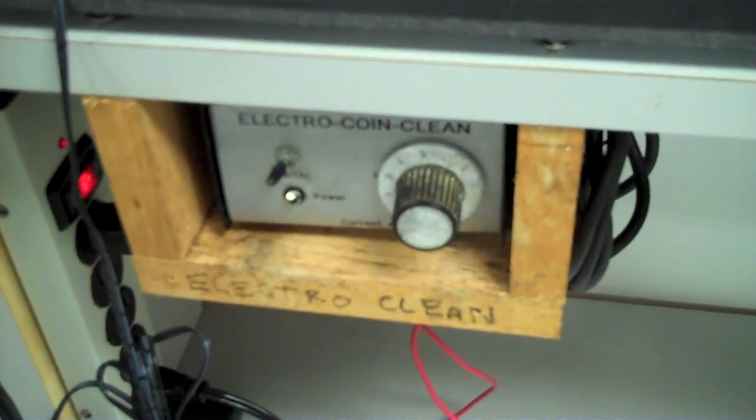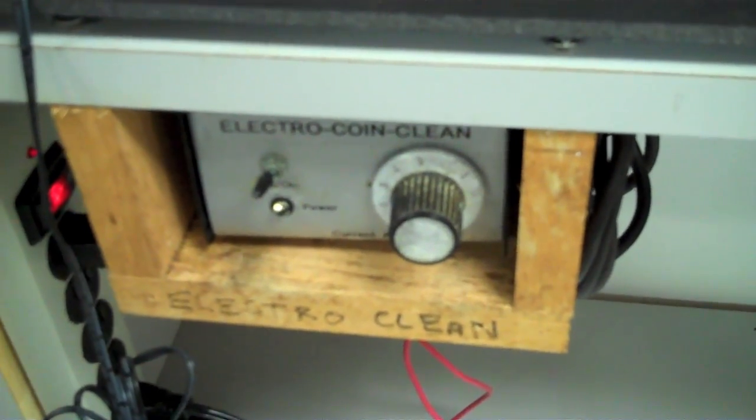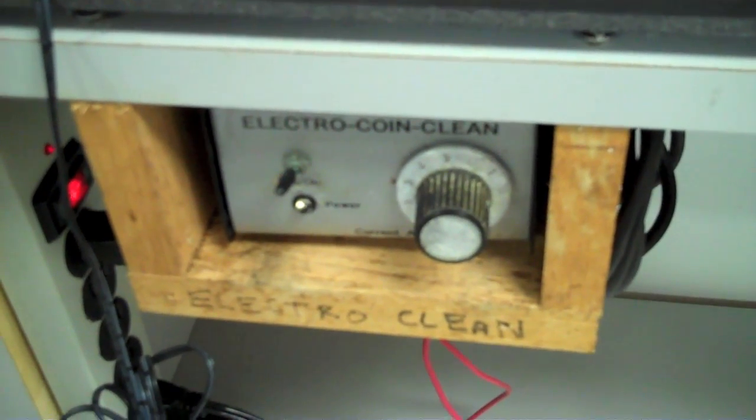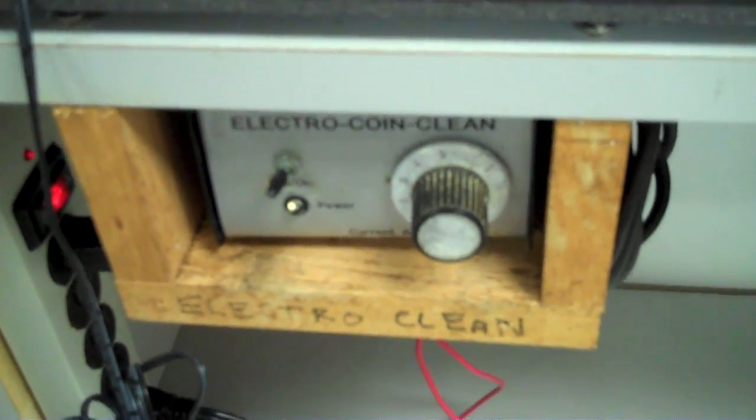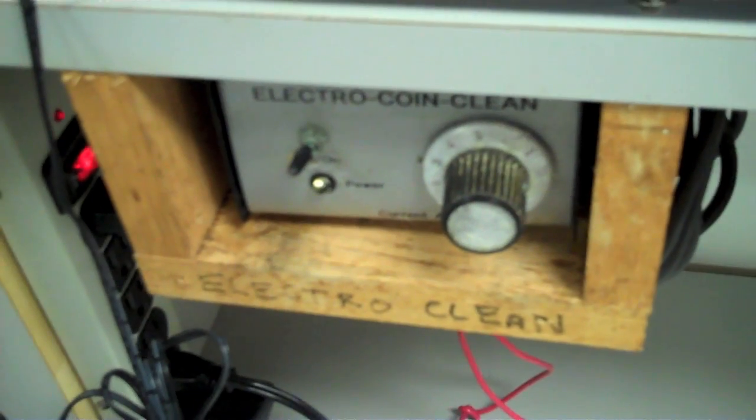But here's the actual unit with the current adjustment knob. And this allows me to adjust the current from a low setting to a high setting, depending on how much cleaning I need to have done on the object.